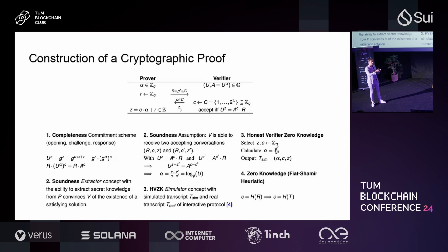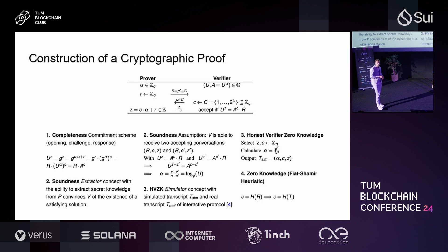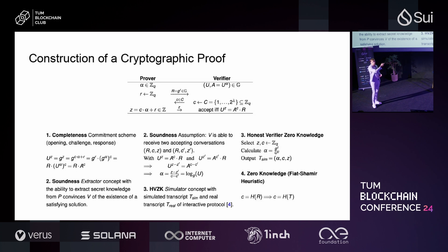The reason it is only honest verifier zero knowledge is because the verifier still has the power to determine the value c and could use it to predict some outcome — for example picking z as zero or some other number to try to learn something from the choice of c. To achieve the real zero knowledge notion, you use the Fiat-Shamir transform, where you replace the verifier's choice of c with a hash function computed at the prover. The verifier then has no choice for playing an extraction game, yielding a non-interactive protocol.